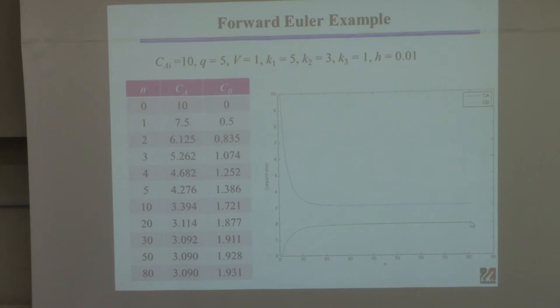I plotted the solution — it looks nice and smooth because I generated 80 values, which is enough to give a smooth curve. There's the concentration of A decreasing and the concentration of B increasing to steady state.